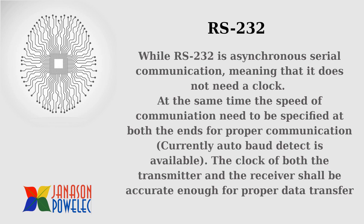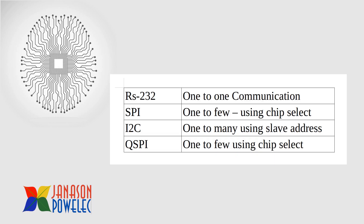Let us see what is RS-232 briefly. RS-232 is asynchronous serial communication, meaning that it does not need a clock. At the same time, the speed of the communication needs to be specified at both ends for proper communication. Currently, auto baud rate detect is available. The clock of both transmitter and receiver shall be accurate enough for proper data transfer in RS-232.